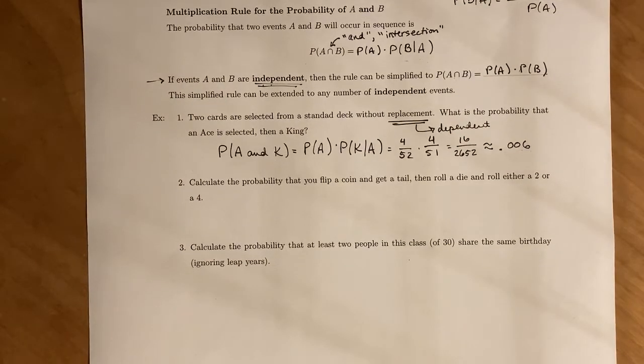Next, we want to calculate the probability that you flip a coin and get a tails. Then you roll a die and either roll a two or a four.